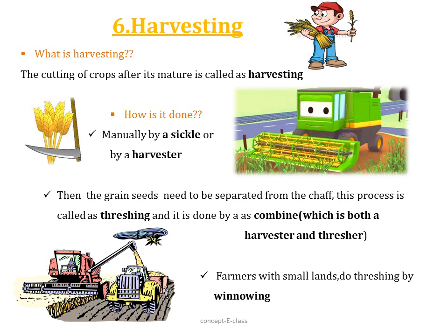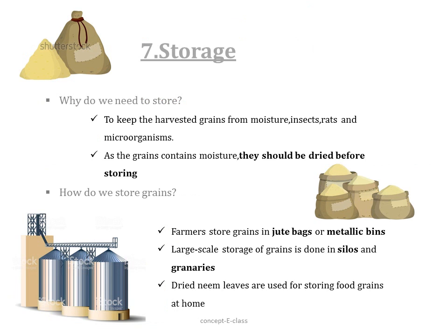The sixth agricultural practice is harvesting. Harvesting is the cutting of crops after they mature. The crops take about three to four months to mature and we either cut the crops close to the ground or pull them out. This can be done manually with the help of a sickle, or by a machine called a harvester. In the harvested crop, grain seeds need to be separated from the chaff; this process is called threshing, done by a machine called a combine. The combine has both a harvester and a thresher — it harvests the crops and separates the grain seeds from the chaff. Farmers with small land do threshing with the help of wind, known as winnowing.